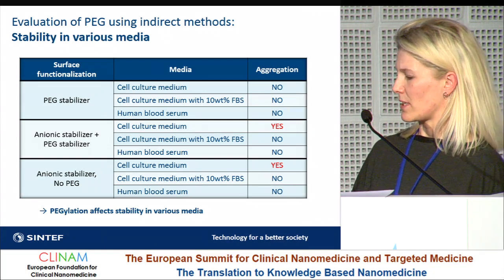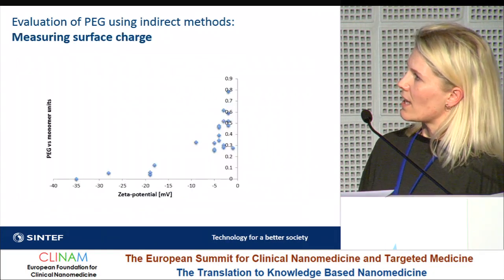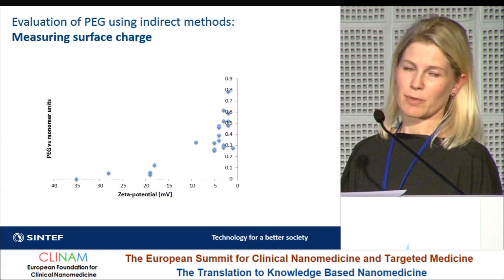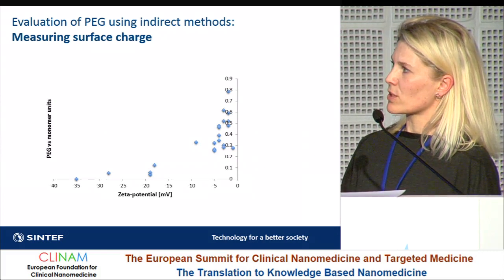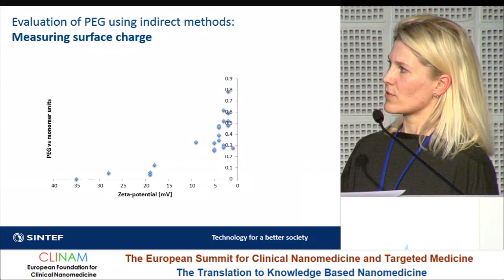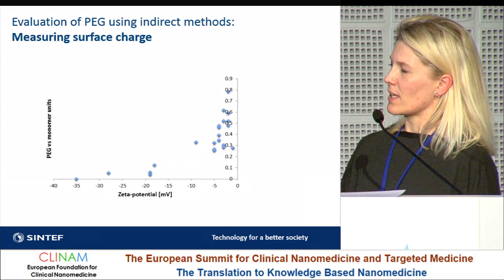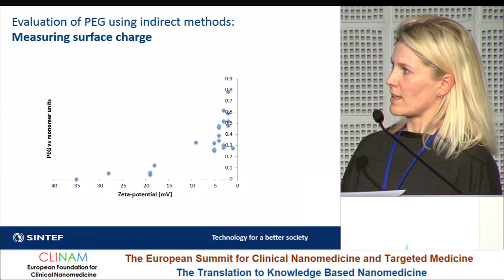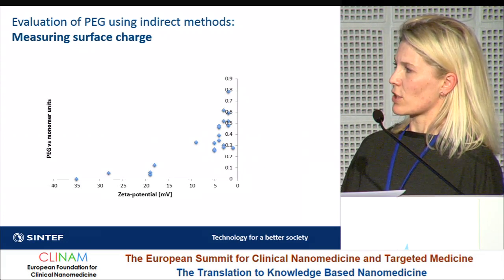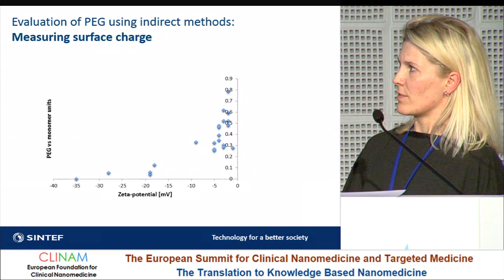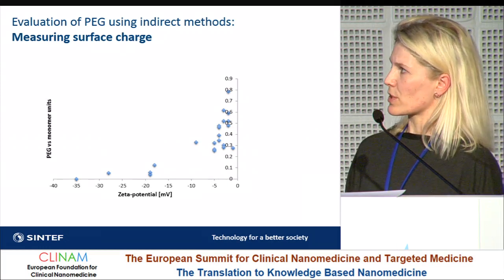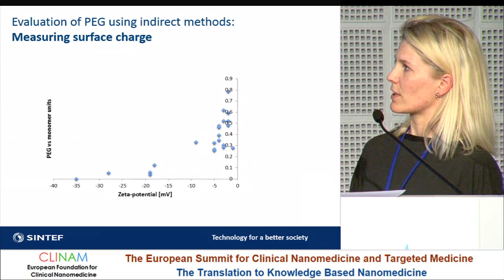Another very simple method is to determine the surface charge, the zeta potential. Our particles without any PEG have a quite high negative charge, and as soon as you start to pegylate the particles, you see that the more PEG we have on the particles, the less charged the particles become. When we have highly pegylated particles, they no longer have a high charge. This is also a very easy method to evaluate pegylation.